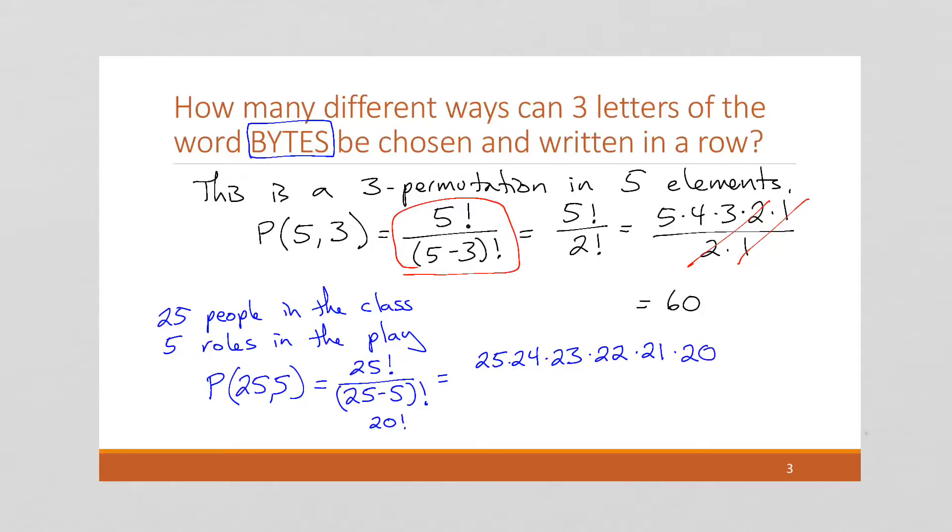I'm not going to write all of this out. I'm just going to do that. Because 20 factorial times all of these digits is 25 factorial. And then we're dividing by 20 factorial.